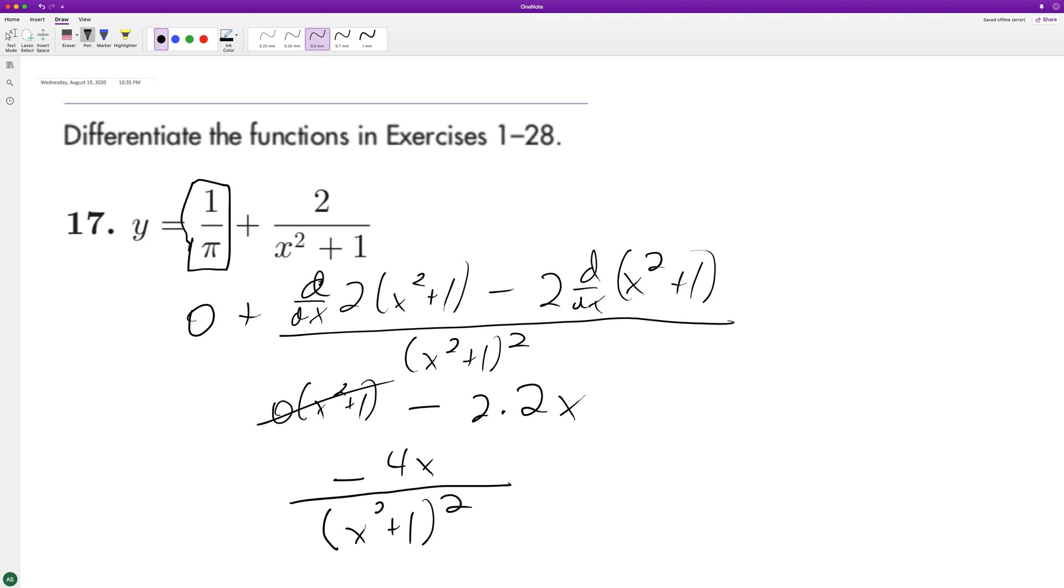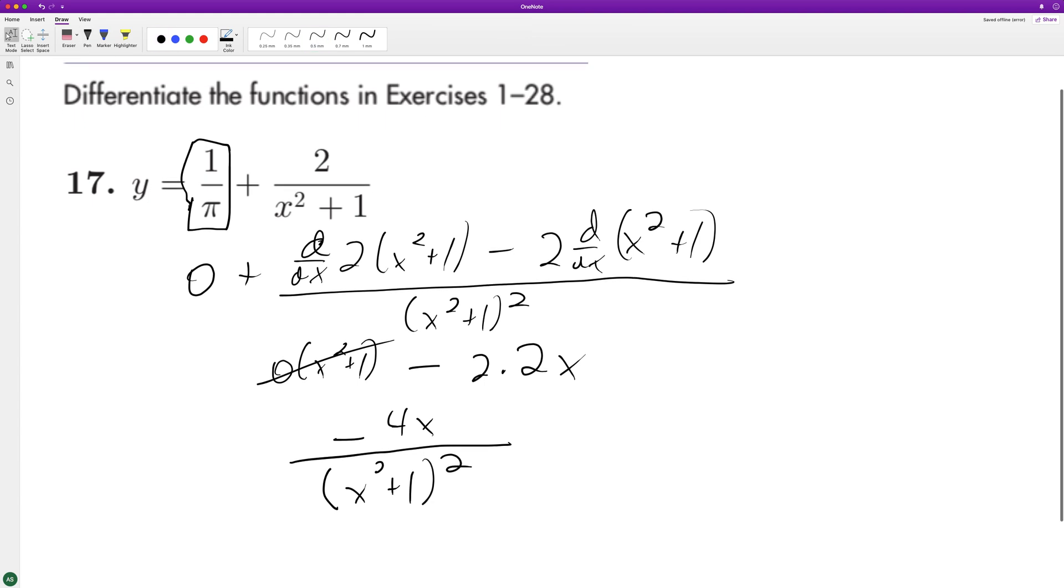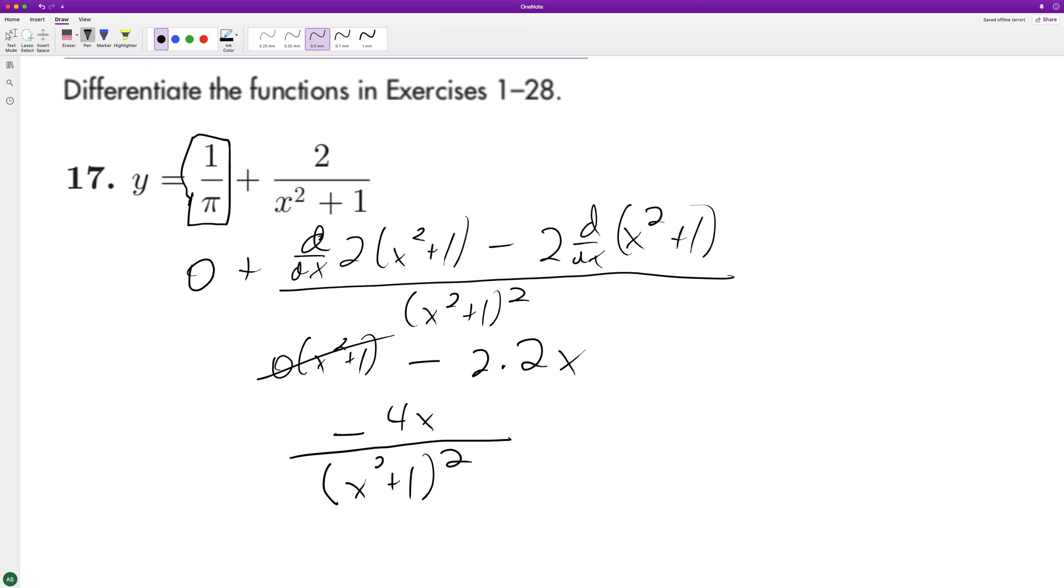So that's the final solution. Just real quick, we probably could have rewritten 2 over x squared plus 1. This equation is done, this is the derivative, but I'll just show you something you could have done.